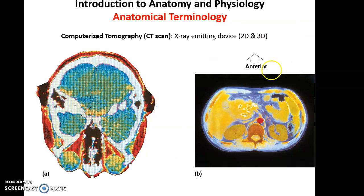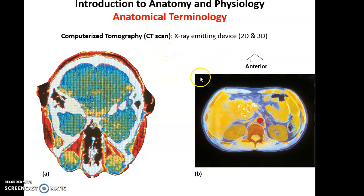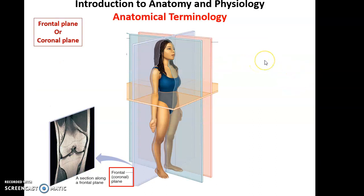With modern technology we have developed new ways to look at the body, such as computerized tomography, or CT scan. CT uses x-rays emitted in many directions to create two-dimensional and three-dimensional views of the inside of the body without cutting it open. This technology lets us see the body in slices. To describe those slices, we use the concepts of planes and sections. A plane is an imaginary sheet cutting through the body, and the section is what you see on the surface where that cut occurred — for example, a section of the knee.